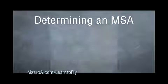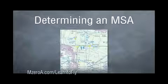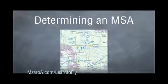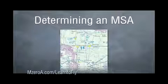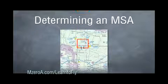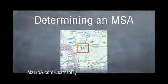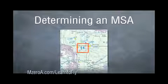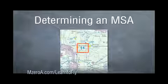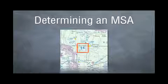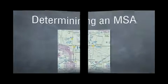Actually determining an MSA or a minimum safe altitude is something I find a lot of students don't know about, because your aviation sectional does it for you. If you look right there, the big 1-4 shows 1,400 feet. So in this quadrant you can fly at 1,400 feet and know that you're going to be at least 500 feet above the highest obstacle.